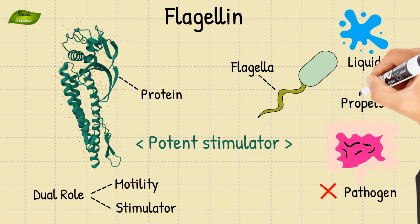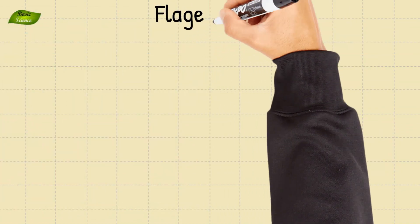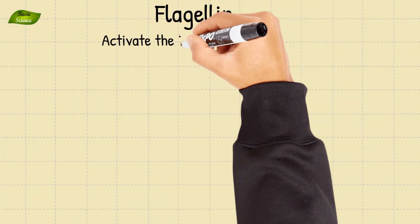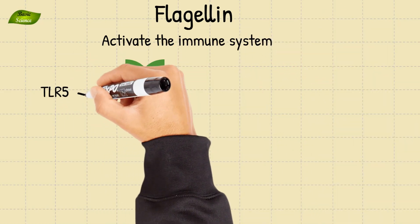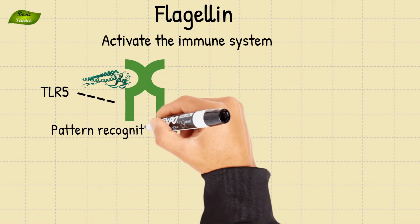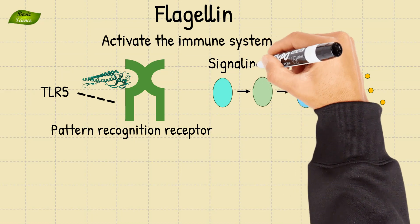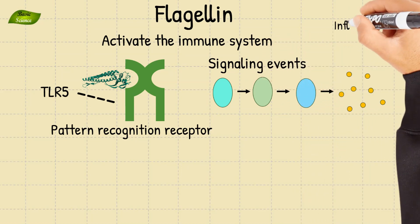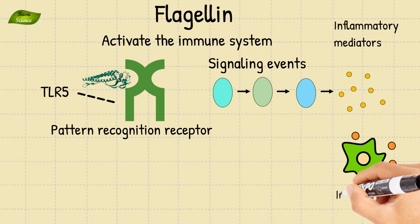Flagellin's ability to activate the immune system comes from its interaction with Toll-like Receptor 5 (also known as TLR5), a pattern recognition receptor. This interaction triggers a cascade of signaling events leading to the production of inflammatory mediators and the activation of immune cells. Numerous additional molecular patterns are still under investigation as ongoing research aims to uncover further insights.